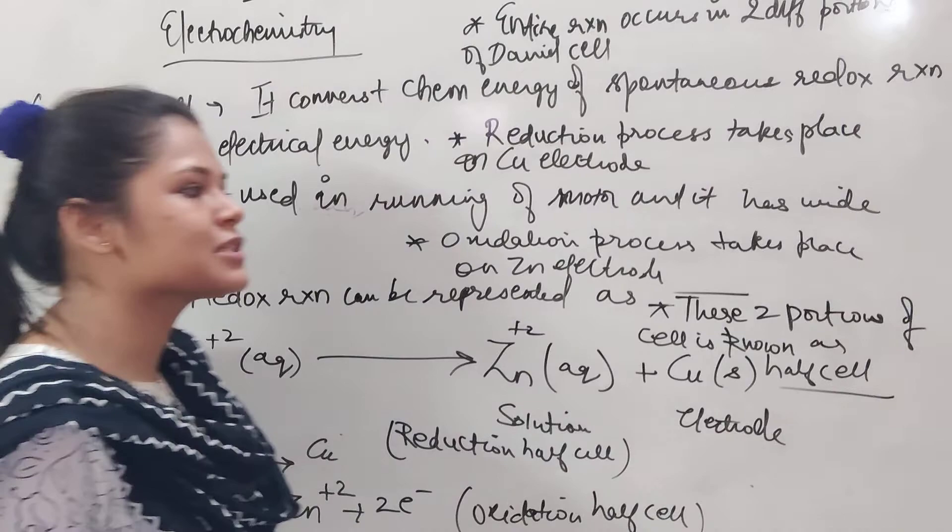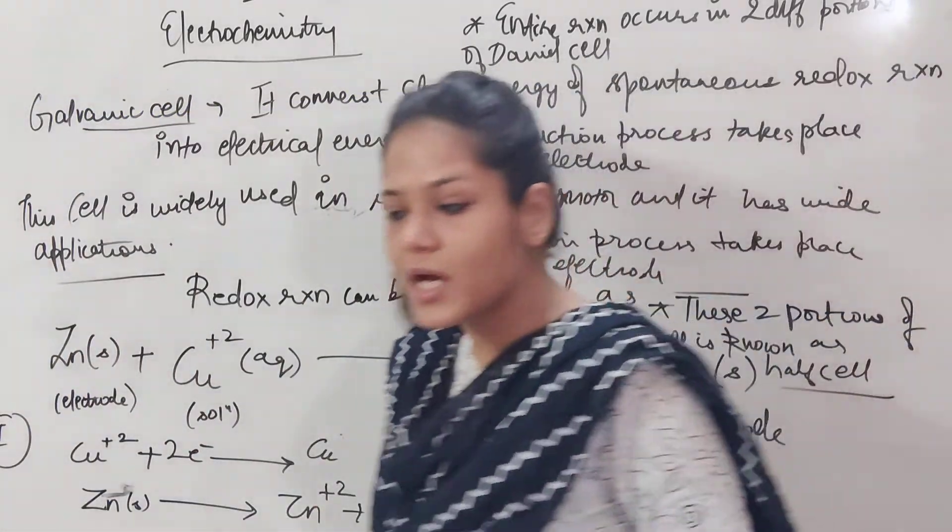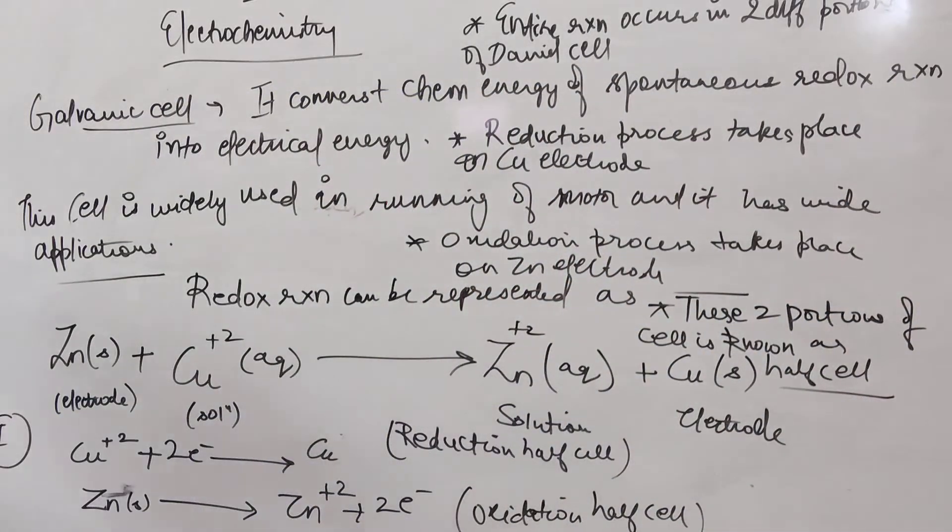So, large number of Daniel cells we can make by taking different combinations of the half cells, large number of Daniel cells you can prepare.